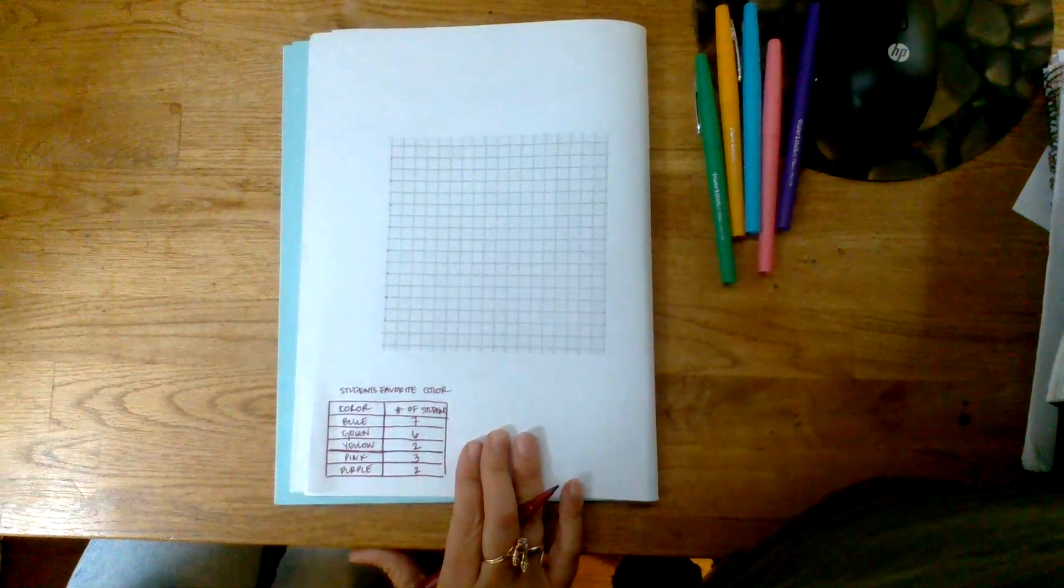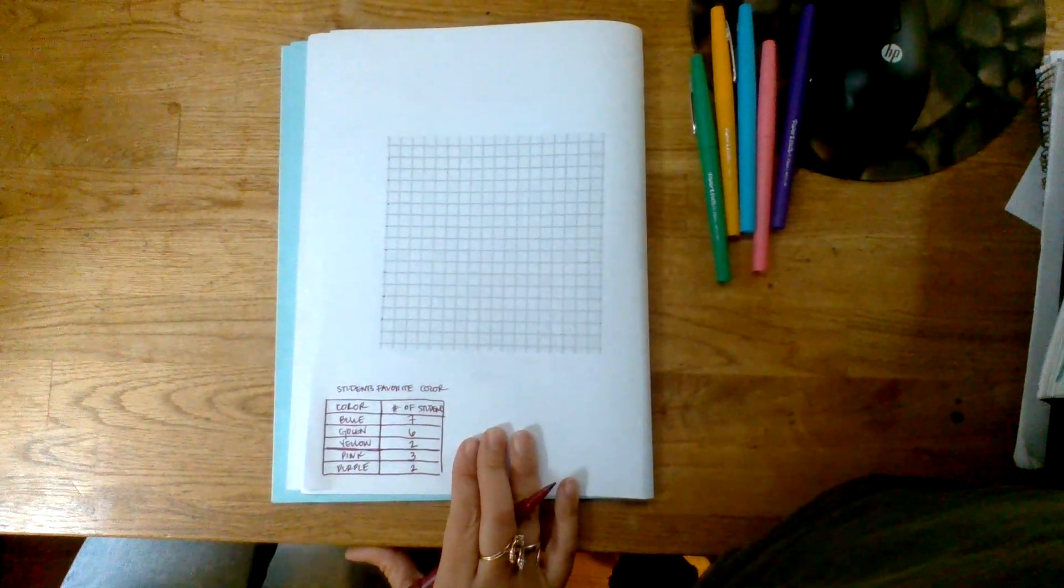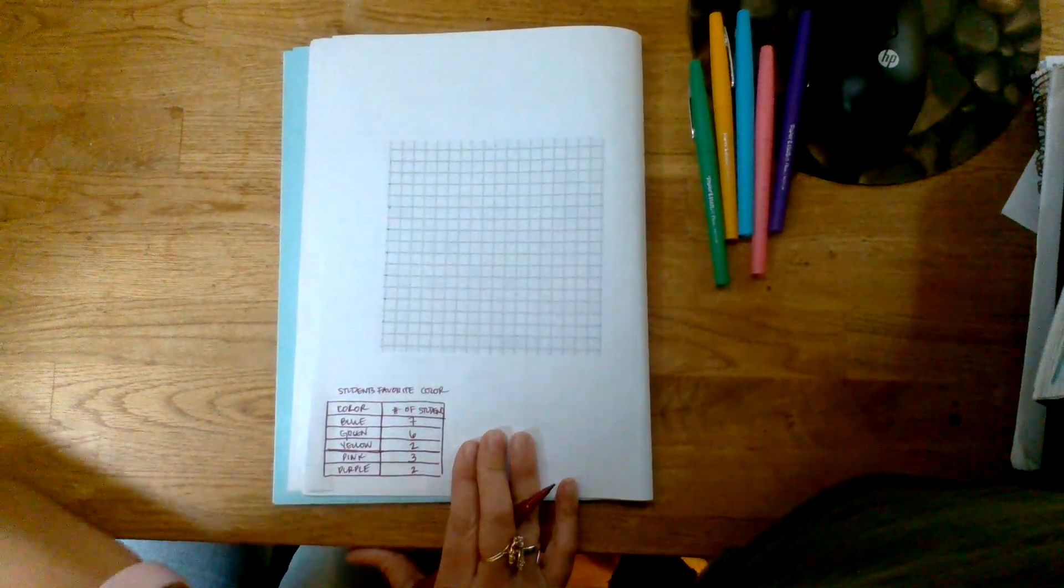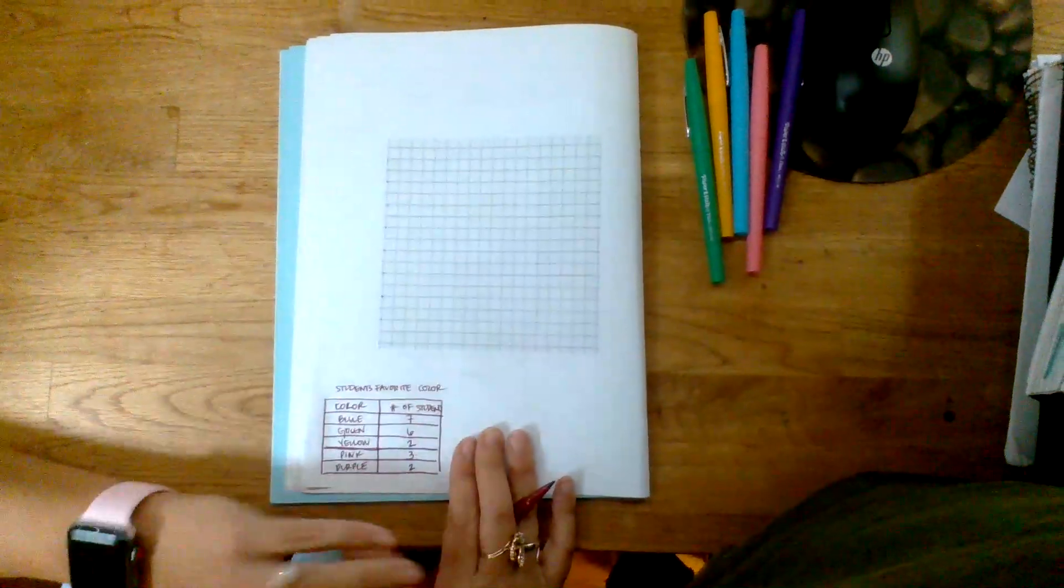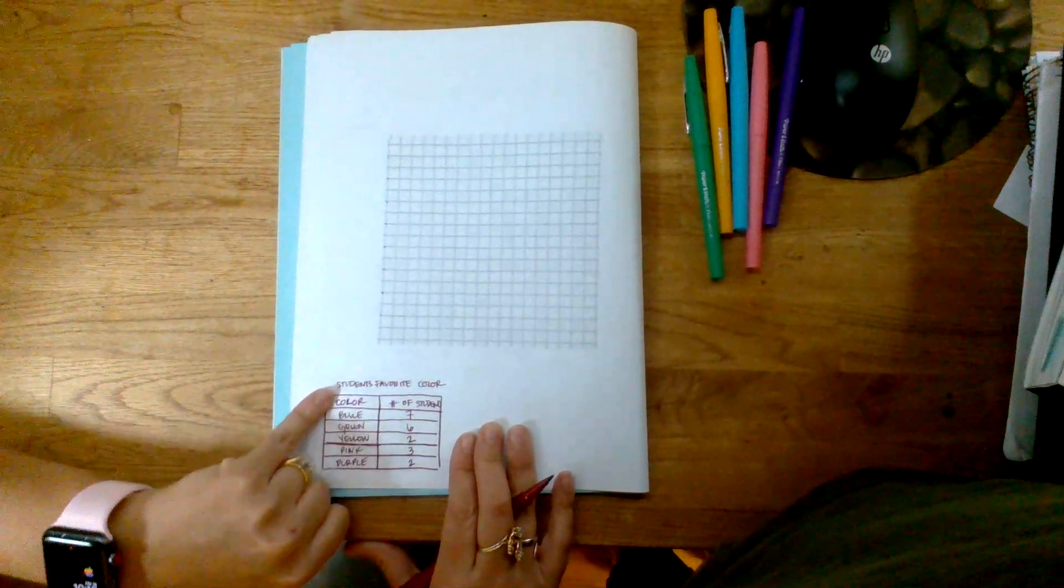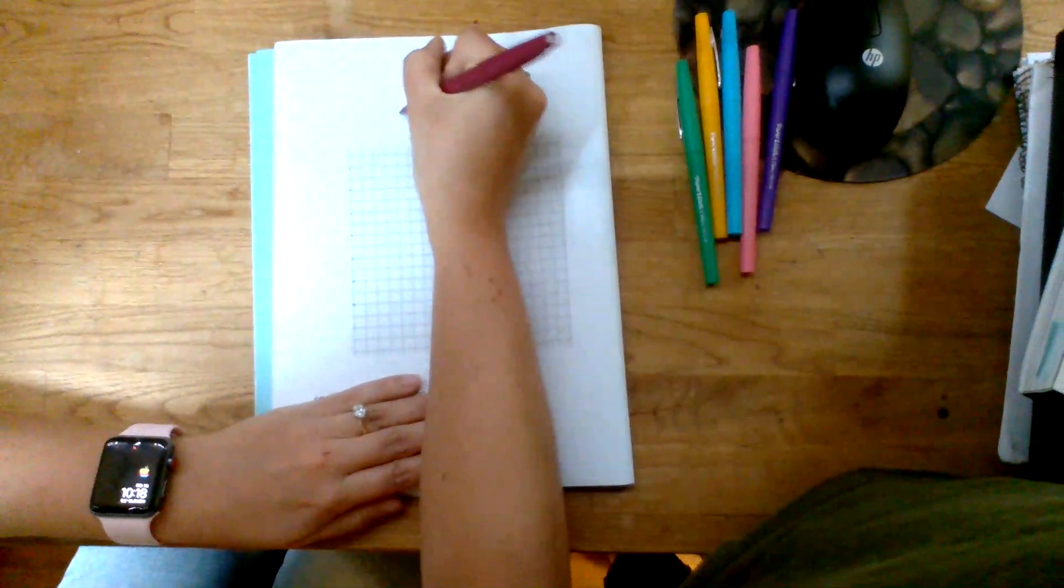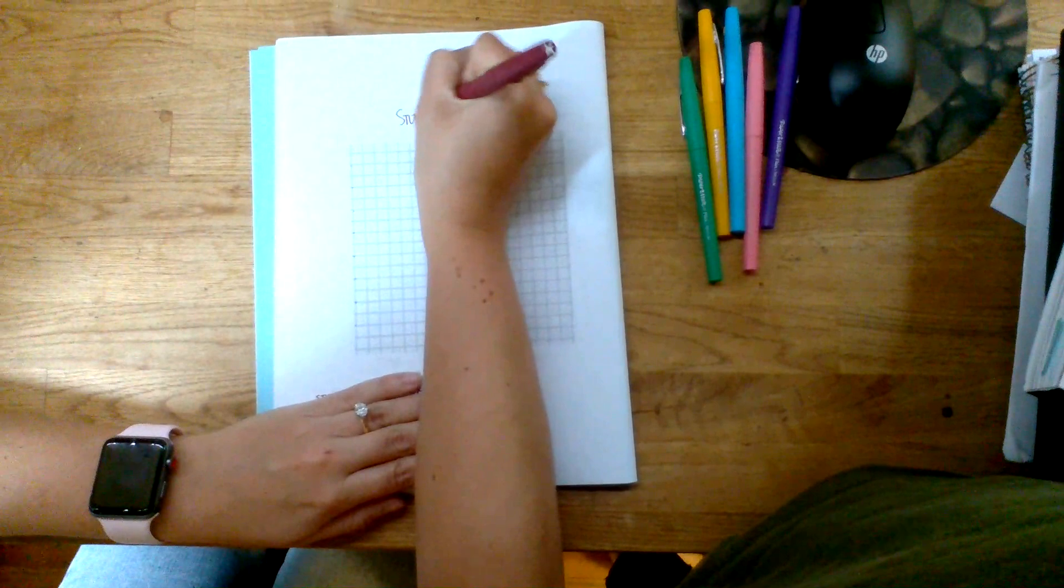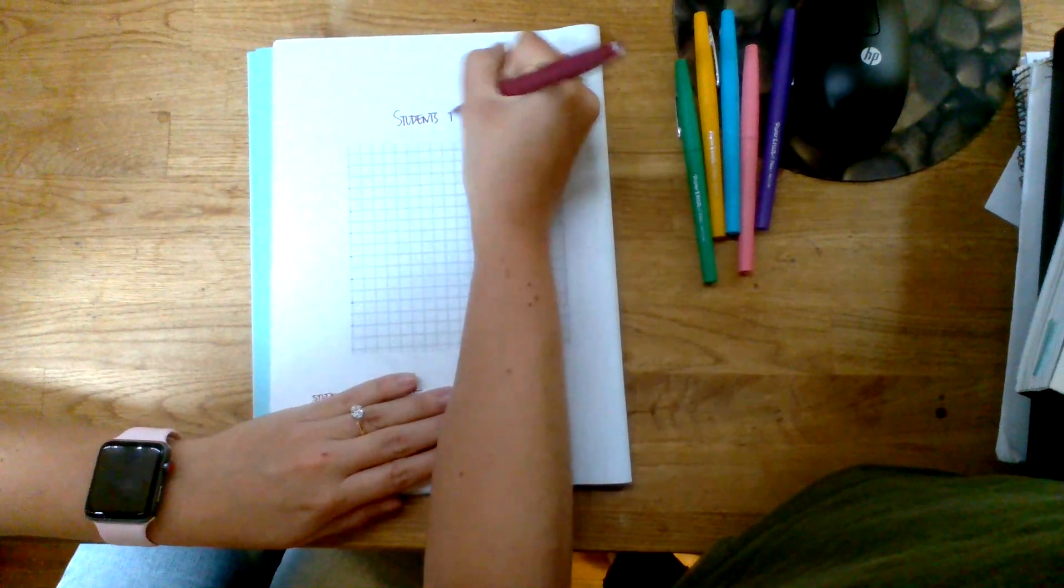Now we're going to graph that information. The first thing we want to do is make our main title, which should be the same as our data table title: students' favorite color. So I'm just going to go ahead at the top, really big, put students' favorite color.